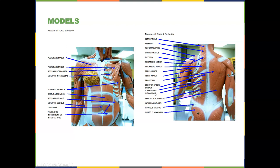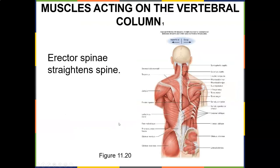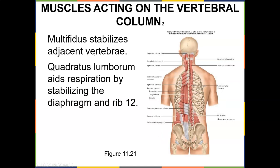The erector spinae group from lateral to medial — I remember it as 'I love sushi': iliocostalis, longissimus, and spinalis. They run from the cervical spine to the sacrum and straighten the spine. The multifidi stabilize adjacent vertebrae. A lot of people working on Swiss balls are trying to recruit the rotatores and multifidi by providing an unstable surface for core stabilization. The quadratus lumborum aids respiration by stabilizing the diaphragm and rib 12. When patients have tightness in the quadratus lumborum, they can have severe low back pain, so keeping it stretched out is very beneficial.